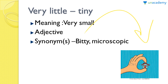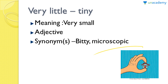For example, in 'tiny house,' 'tiny' is the adjective because it's describing the noun 'house.' The synonyms for this are 'bitty' — if we say 'small bit,' a bit is a small part, so 'bitty' means again very small — and 'microscopic,' which is something which has to be seen through a microscope. So you can use the words bitty, microscopic, and tiny for the word 'very little.'